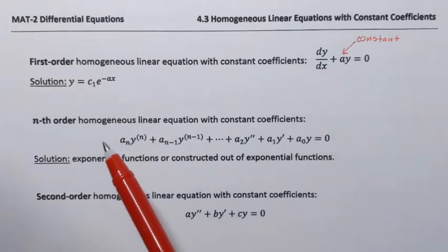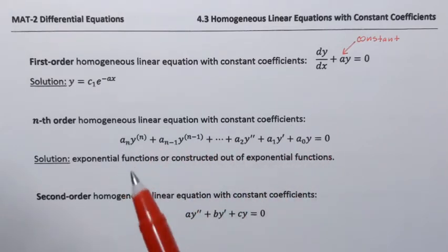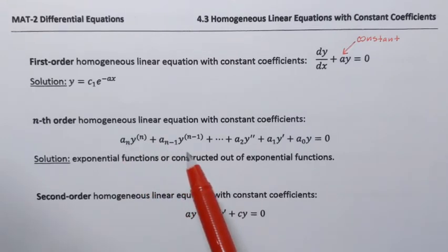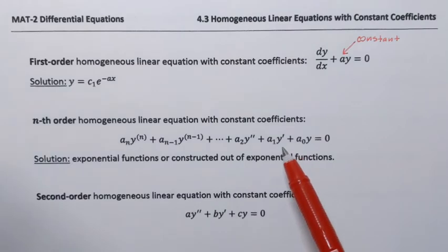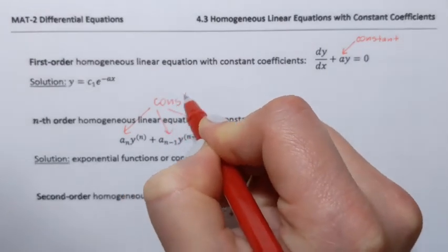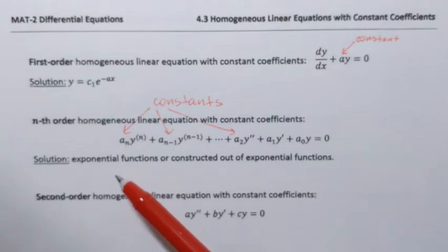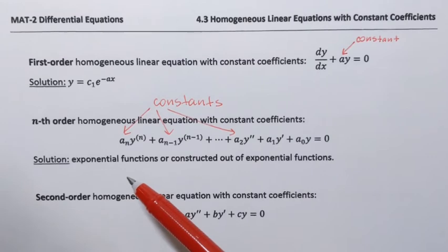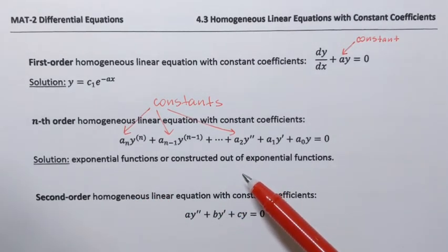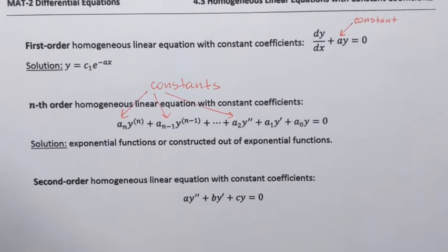Now if we move on to the nth order homogeneous linear equation with constant coefficients, it's going to have this form. In this equation, a sub n, a sub n minus 1, and so on — a2, a1, a sub 0 — these are all constants. What's interesting is that the nth order homogeneous linear equation with constant coefficients has solutions that are also exponential functions, or functions that can be constructed out of exponential functions. But let's just take it one step at a time and look at the second order homogeneous linear equation with constant coefficients.